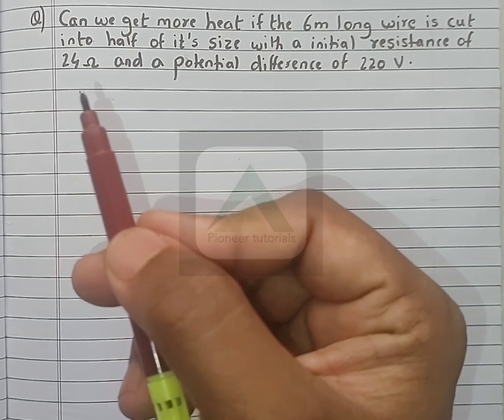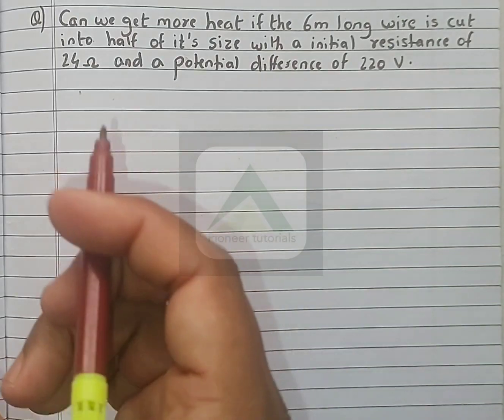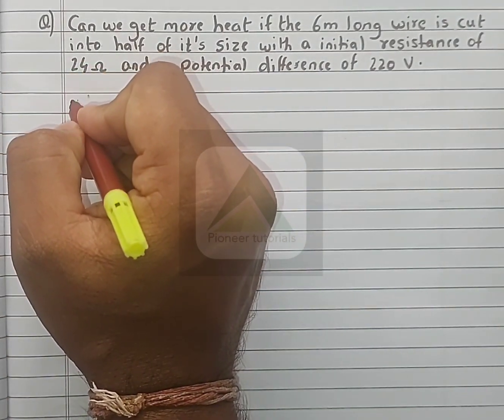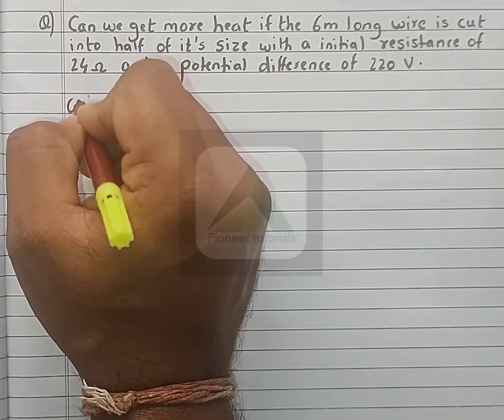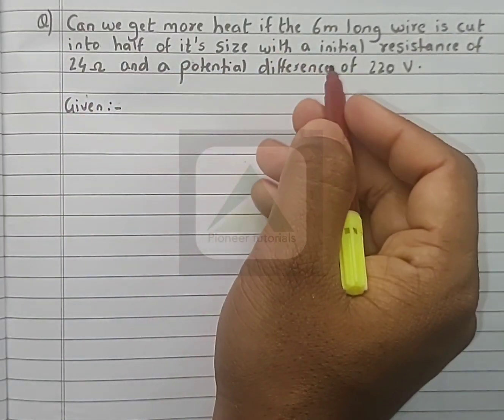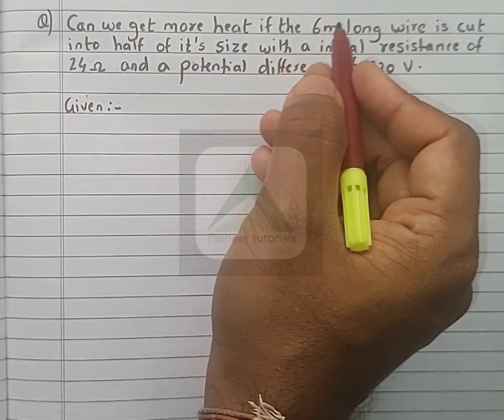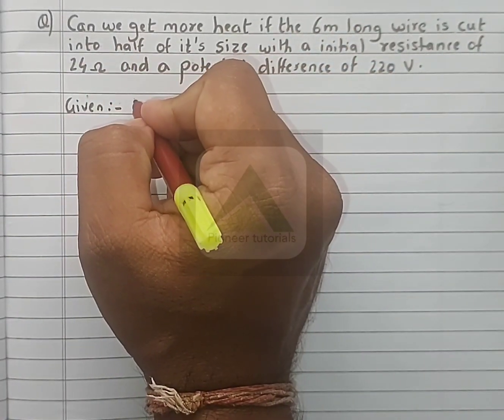So let's start with the numericals. Given: For the original wire...